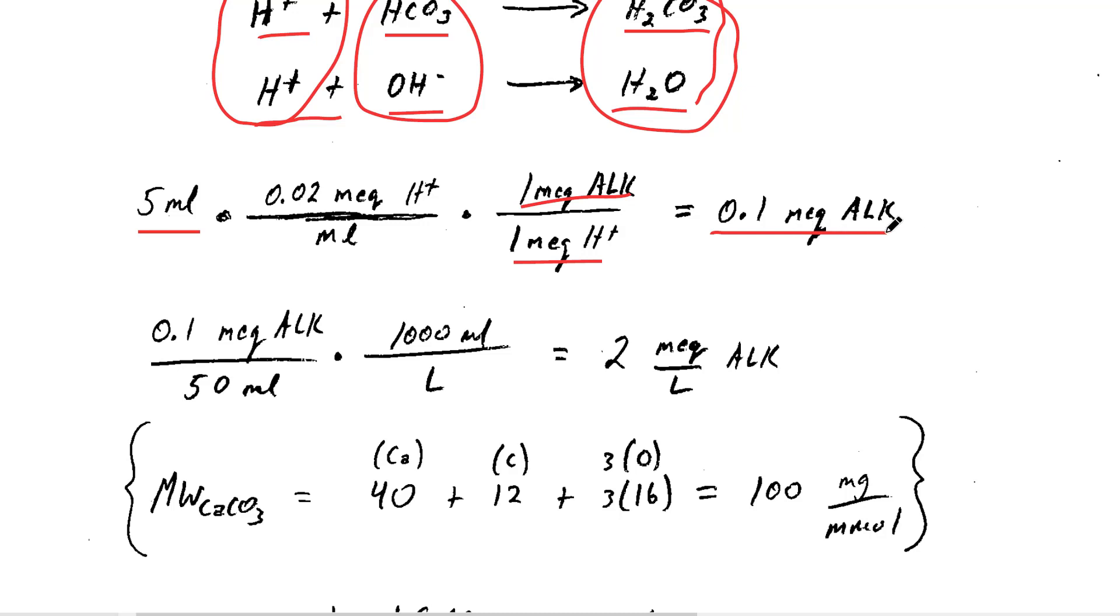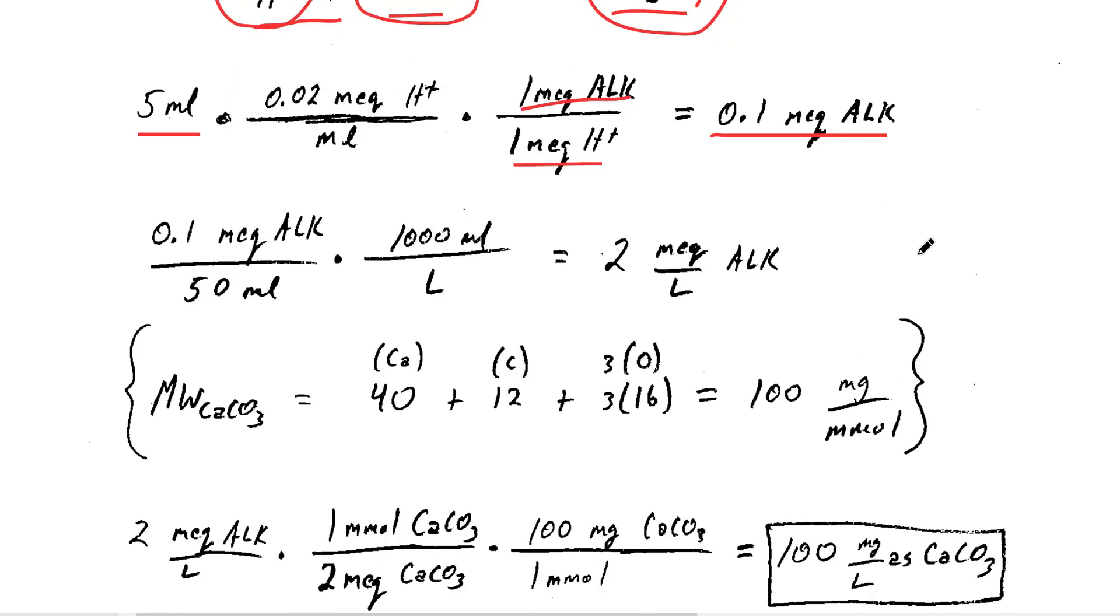We have that same number of equivalents of alkalinity in the sample. Now if we have 0.1 milliequivalents of alkalinity in that 50 milliliter sample, we can convert to liters, and now we know that we have two milliequivalents per liter of alkalinity.